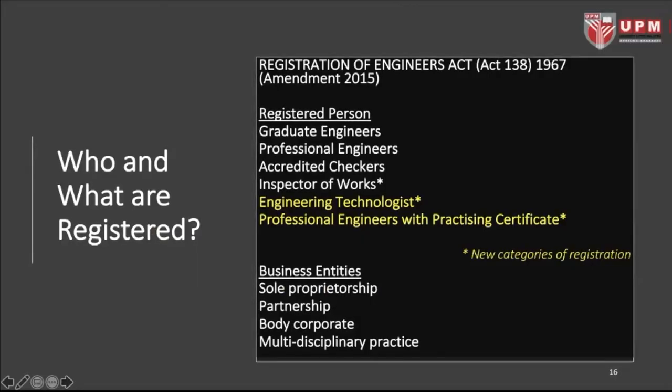Earlier I mentioned the registration of engineers and registered persons. In 2015, not only engineers are registered — but all personnel involved in the engineering profession must be registered by the Board of Engineers Malaysia. We call them registered persons. So who and what are registered? Basically, graduate engineers — people like yourselves when you graduate — need to get your degree certificate and transcript endorsed by a professional engineer.